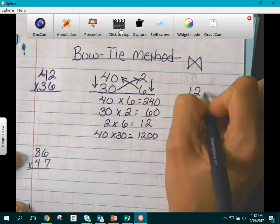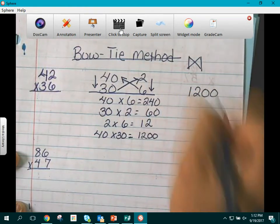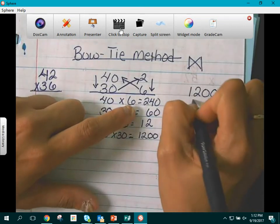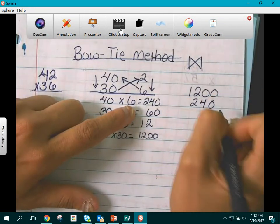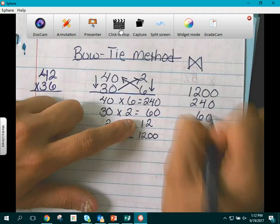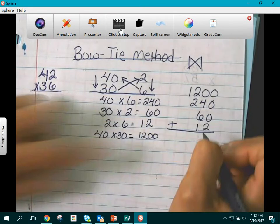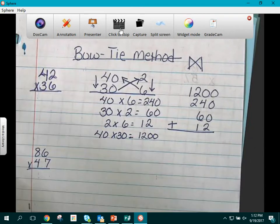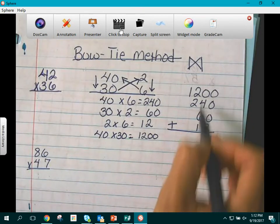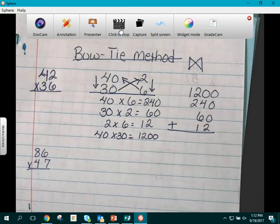So they are going to take 1,200, they are going to take 240, 60, and 12. It is extremely important that the students line up every digit in their correct place value. This will help them when they are adding.